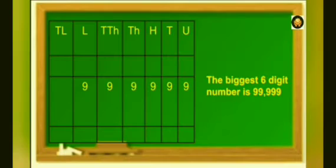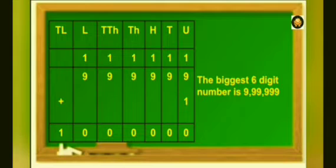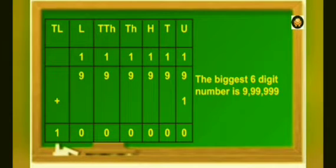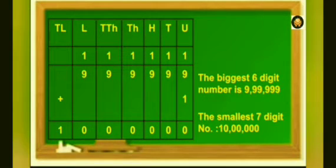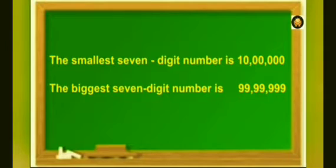Now, let's see how to find the smallest 7-digit number. If we add 1 to the biggest 6-digit number, we will get the smallest 7-digit number. For that, we have to make 1 more place for the 10 lakhs to the left of the lakh place. So, the smallest 7-digit number is 10 lakh and the biggest 7-digit number is 99,99,999.